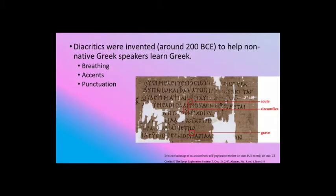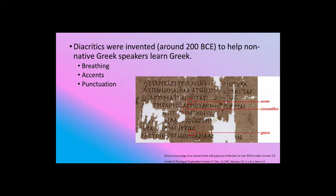Just a little bit of background. Diacritics — which is the entire family of breathing accents, punctuation, and everything that is not the Greek letters — were invented around 200 BCE to help non-native speakers learn Greek. Native Greek speakers did not need these marks to help them figure out how to pronounce things; they knew how to pronounce things. For a long time Greek was primarily an oral language. We start to see marks in things like papyri in the Alexandrian era, with people marking all these pronunciations in.